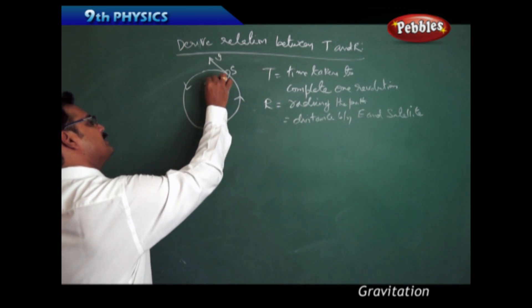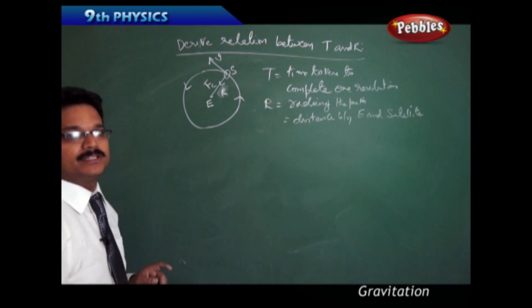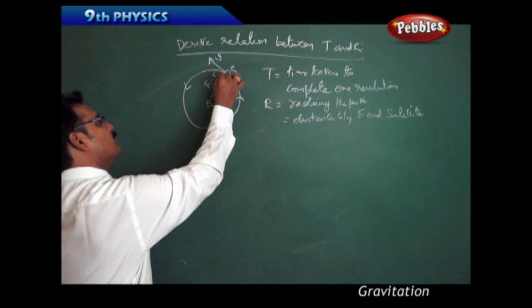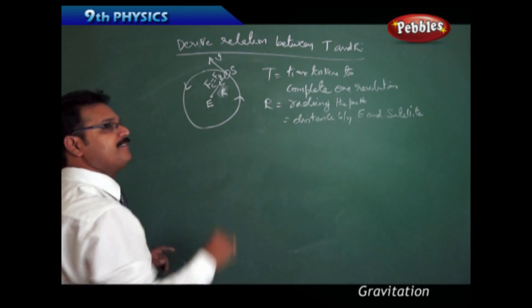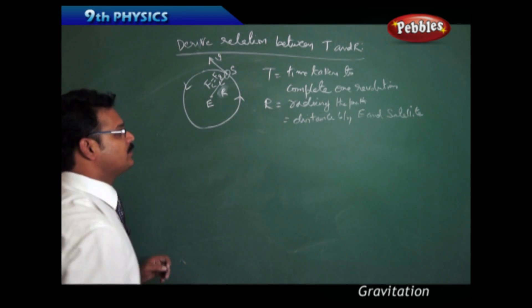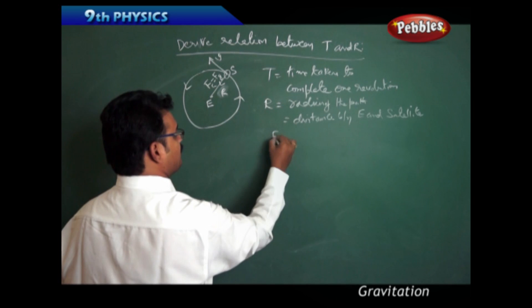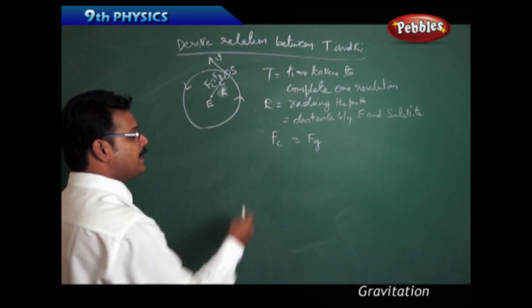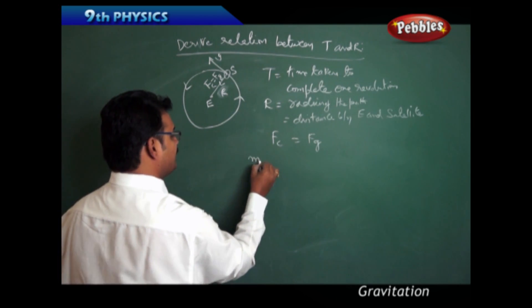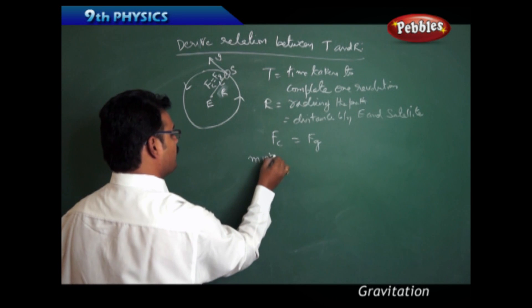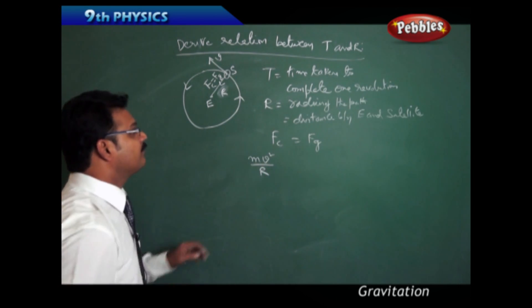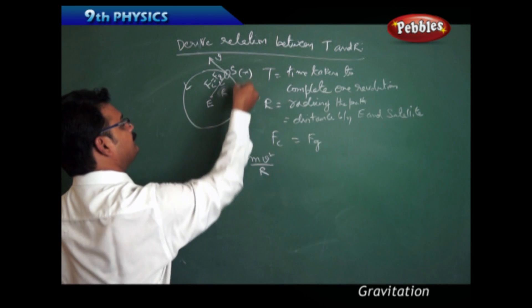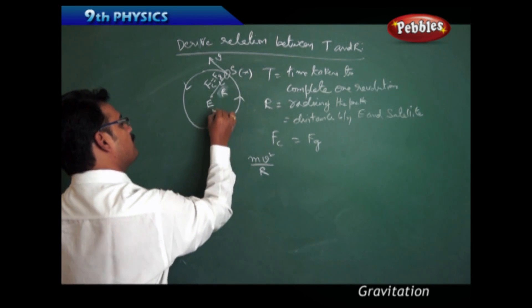Now how are we going to derive the relationship between T and R? The centripetal force is acting towards the Earth, and it is also equal to the force of gravity. So take the expression: centripetal force equals gravitational force. The centripetal force formula is mv²/R, where m is the mass of the satellite and capital M is the mass of the Earth.